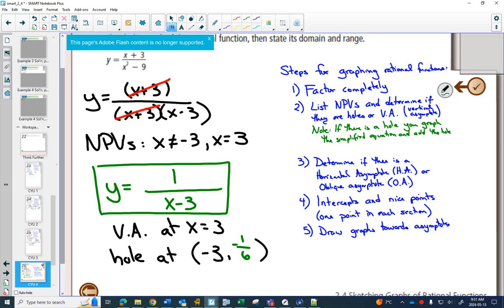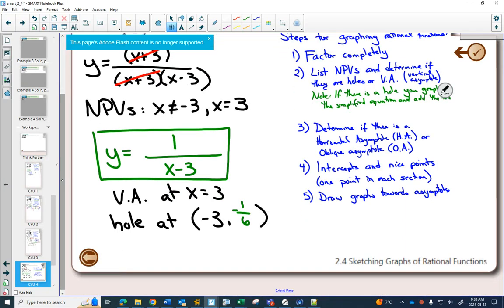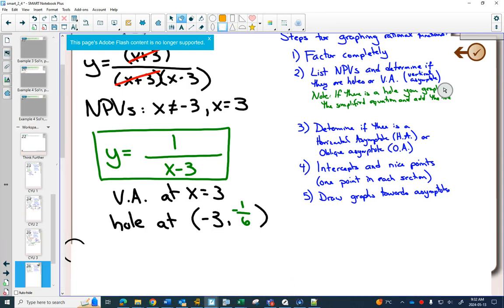Now moving forward, we still have a rational function. So we still have to do steps 3, 4, and 5. But now we use the simplified equation for the rest of our equation. So we're going to graph the green graph. It has a vertical asymptote at x equals 3, and we're going to have to add a hole.